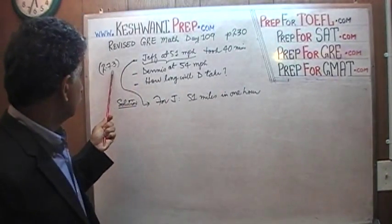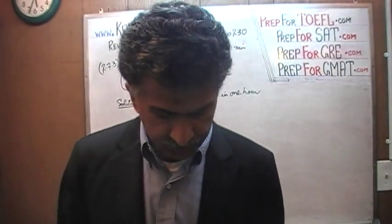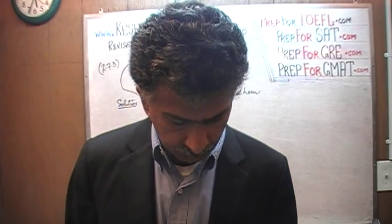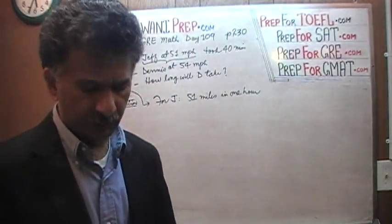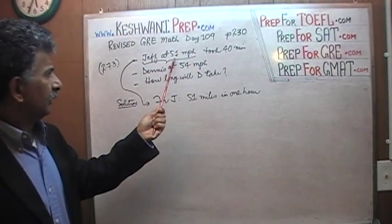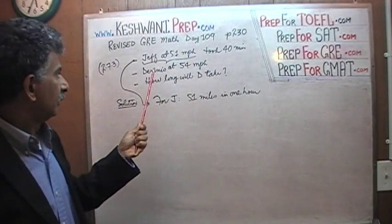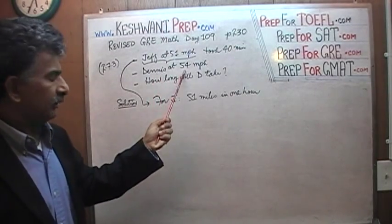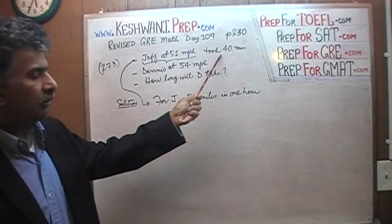Problem number 2.7.3. Turn to that page and read the problem to yourself. It says: in a driving competition, Jeff and Dennis drove the same course at average speeds of 51 miles per hour and 54 miles per hour respectively. Jeff is going at 51 miles per hour and it takes him 40 minutes to go around the course. His buddy Dennis is going at 54 miles per hour. The question is: how long will Dennis take to cover the same distance that took Jeff 40 minutes?